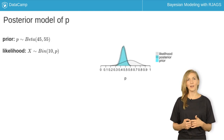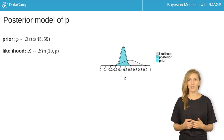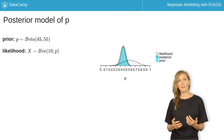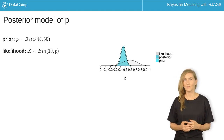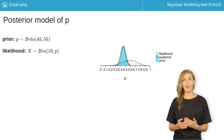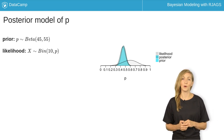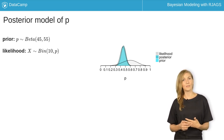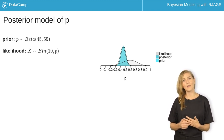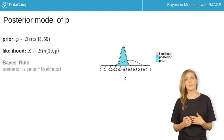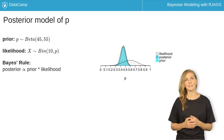The prior and likelihood, scaled here for comparison, don't completely agree, yet both are valuable to a Bayesian analysis. The prior contributes knowledge that you built prior to the most recent poll. The likelihood provides insight into the values of p that are most compatible with the current polling data.